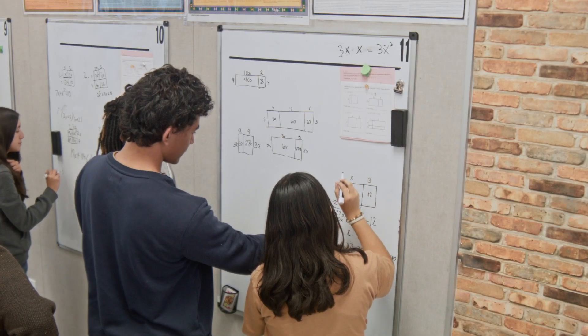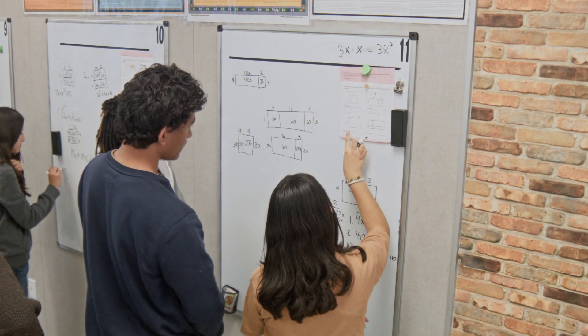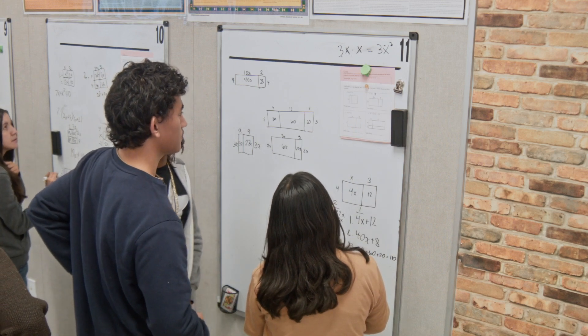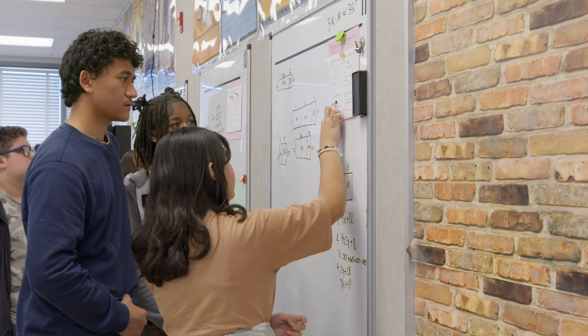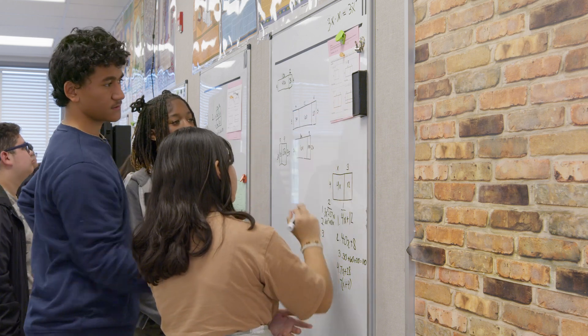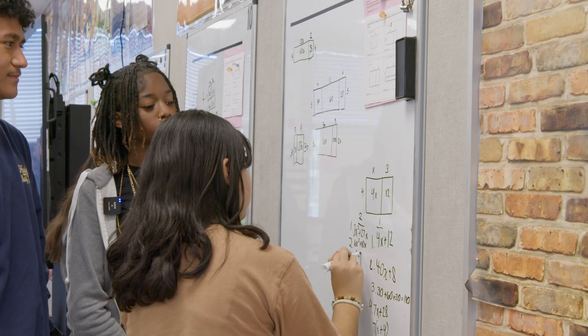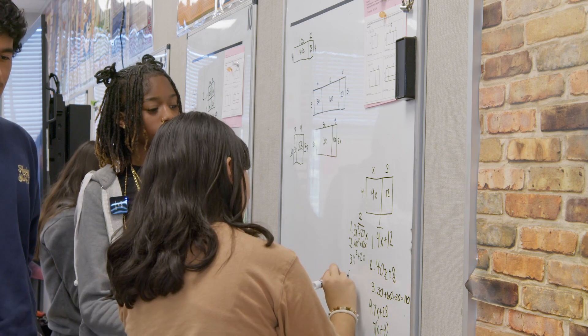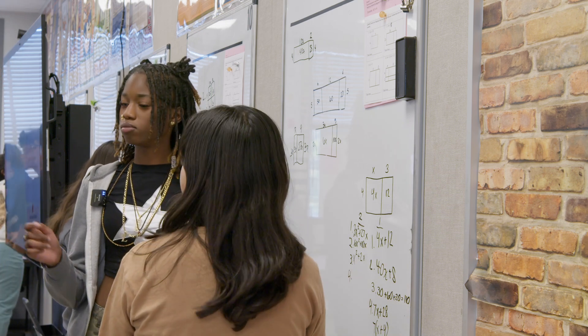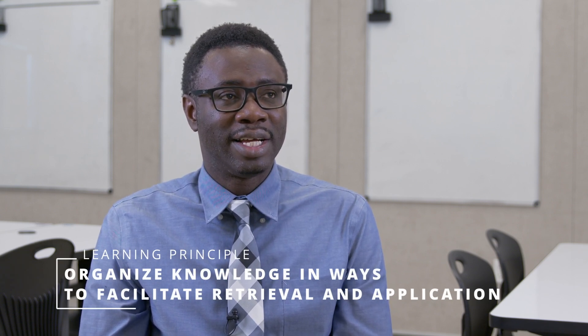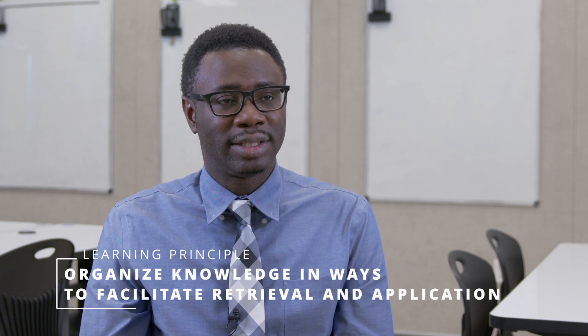Students worked through expanding expressions: you wouldn't add the x's because there's an exponent, so it's x squared plus 2x, and two times x squared. Researchers have found that students need to be able to apply what they've learned in both routine and novel situations. The way that learning is organized is very important — knowledge needs to be consolidated and organized at some point in the lesson to make it easier for students to retrieve and apply that information.